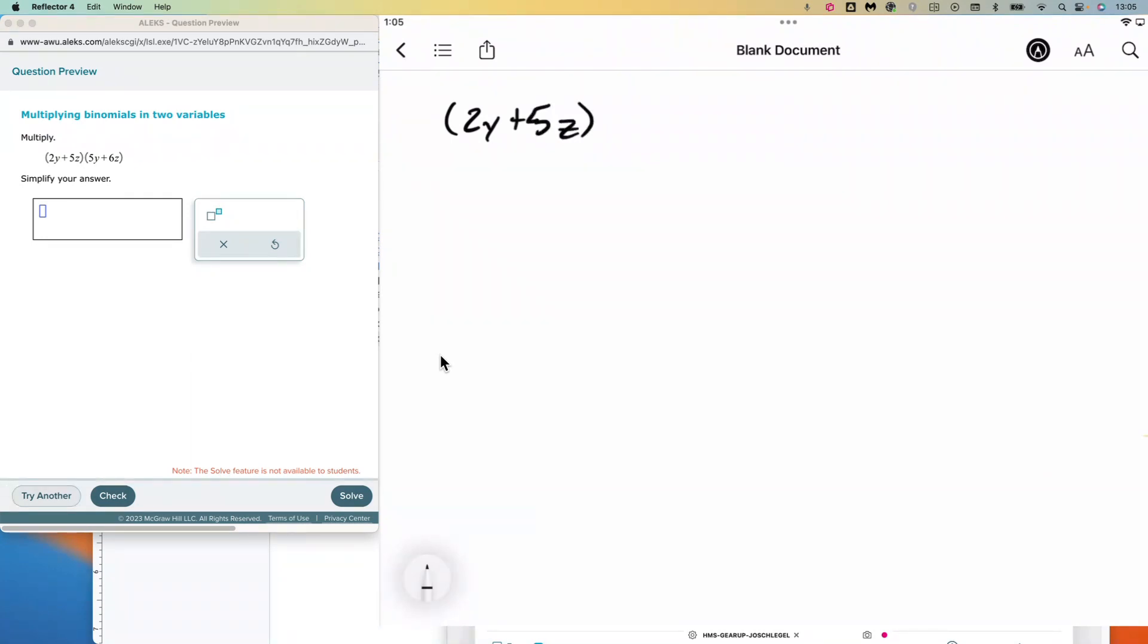So we've got 2y plus 5z times 5y plus 6z. Now some teachers teach this method called FOIL, which stands for first, outside, inside, last.